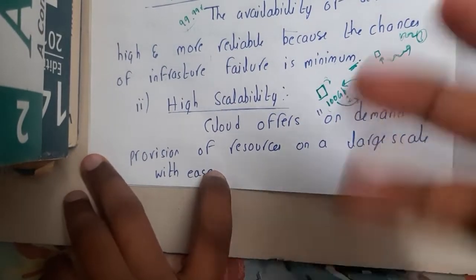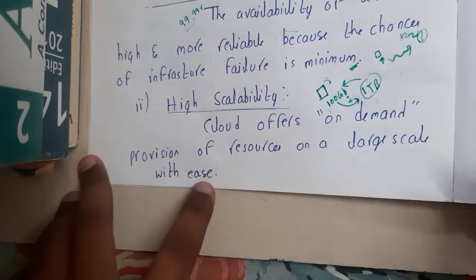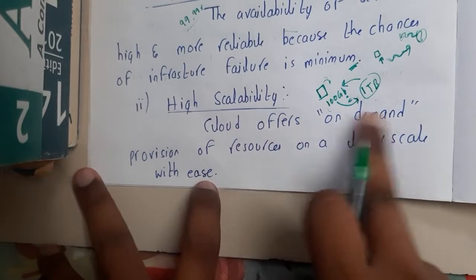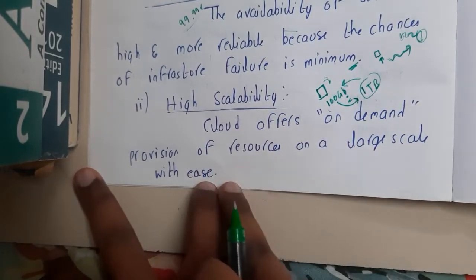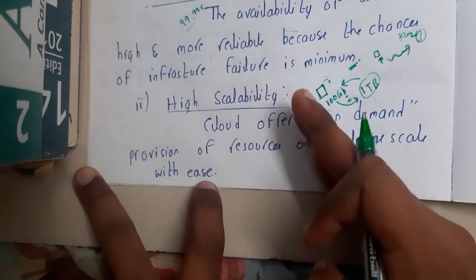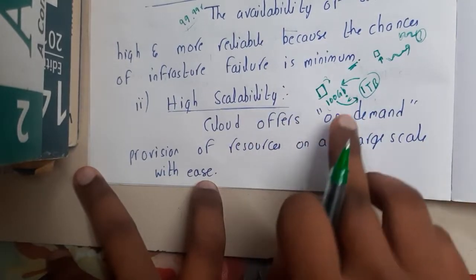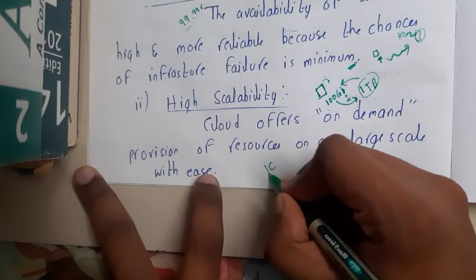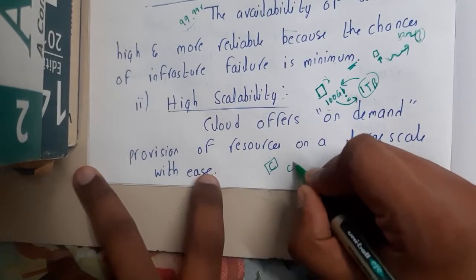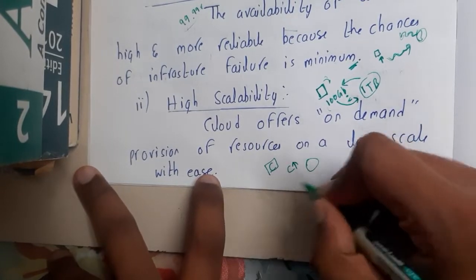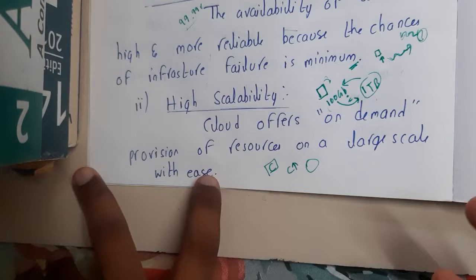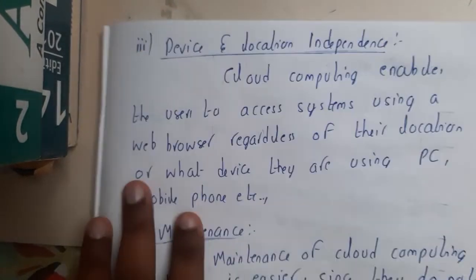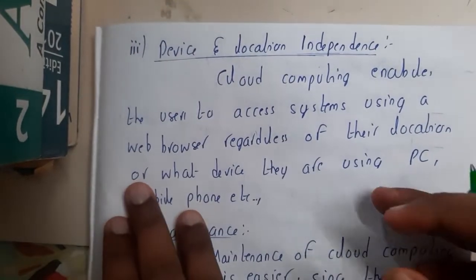Cloud offers on-demand provisioning of resources on a large scale with ease. Whenever you want to increase your speed or resources — not just storage, but also computational power — you can increase your CPU, your RAM, your processing speed, and all those things.